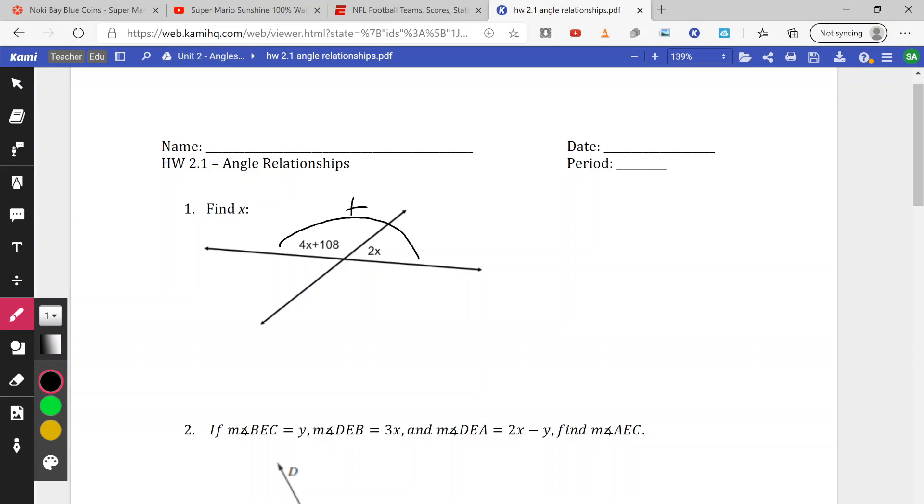So I can add these two things together and I'm going to get 180. And what we're going to do is we're going to solve for x so I can combine my like terms. I can add my 4x and 2x together to get 6x plus 108. It's going to give me 180.